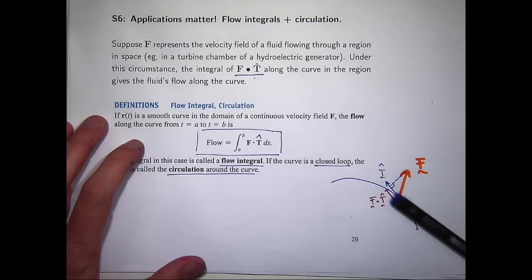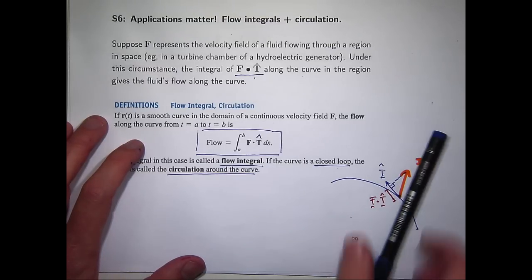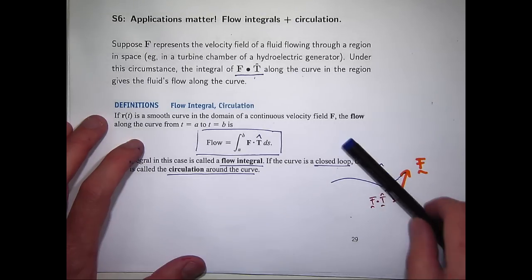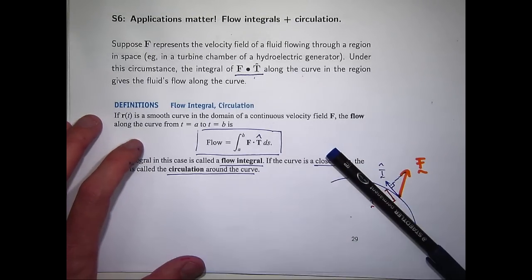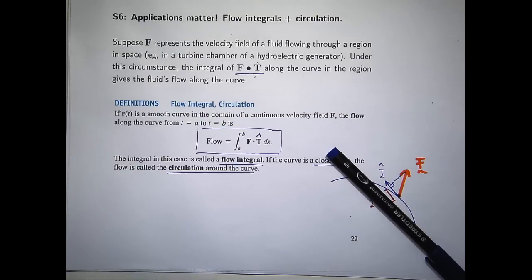If F is almost parallel, let's say F is actually pointing essentially in the same direction. If F is almost parallel to the unit tangent vector, what does this mean? It means that there's going to be a high flow rate because essentially it's pushing in the same or moving in the same direction.